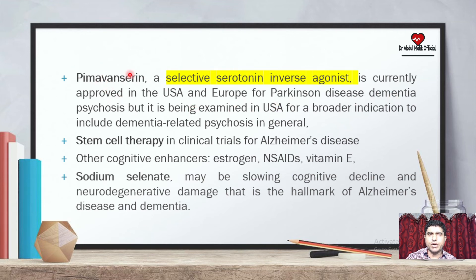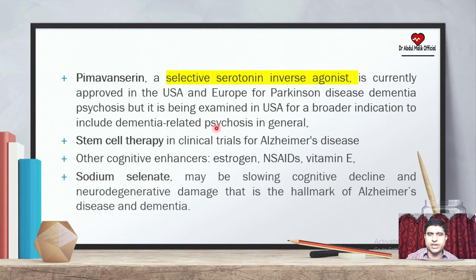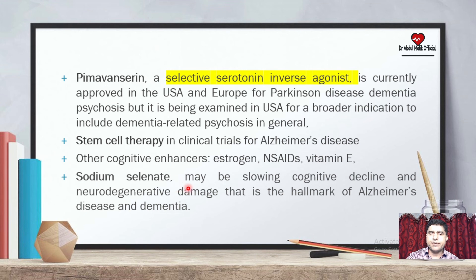Pimavanserin is being examined for Parkinson's disease dementia and psychosis. It is also being studied in Alzheimer's disease, where the chances of dementia and associated damage — which is the hallmark of Alzheimer's disease and dementia — are being investigated.